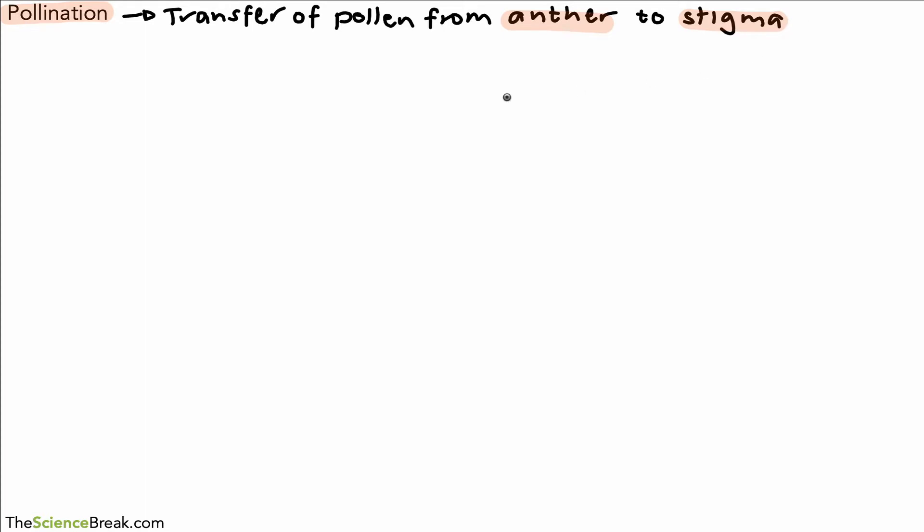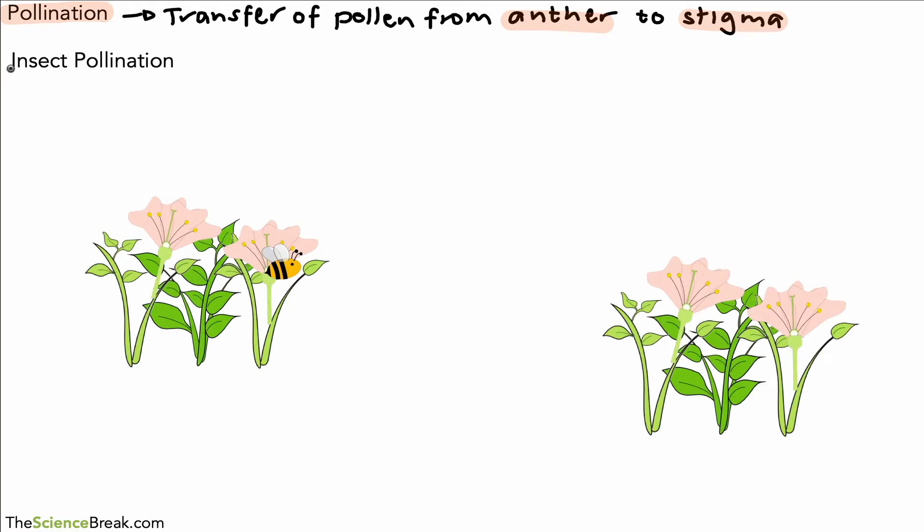Now this can be transferred in two ways. The first way we're going to look at is insect pollination. So here we have our insect, very commonly it will be a bee.